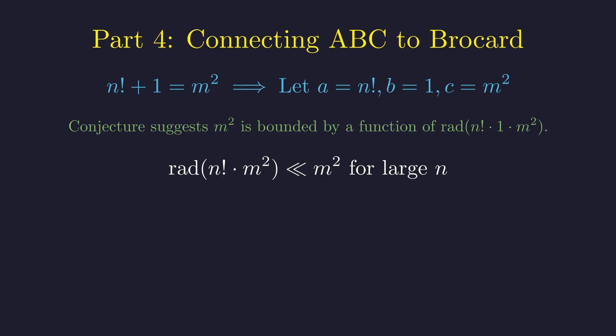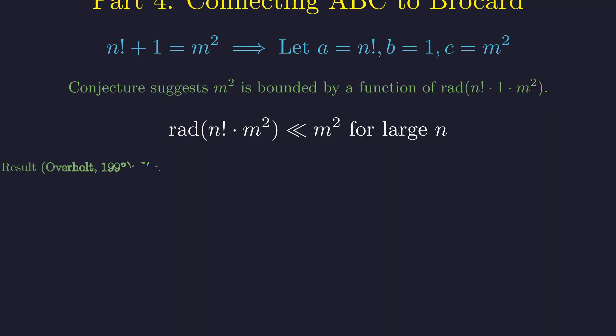The math gets very deep here, but intuitively, the radical grows far more slowly than the original numbers. But the astounding result, shown by Marius Overholt in 1993, is that if the a, b, c conjecture is true, it proves that Brocard's problem can only have a finite number of solutions. It doesn't tell us what they are, but it proves they are not infinite.